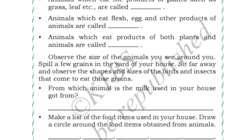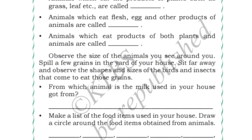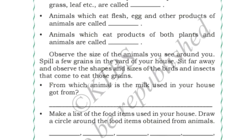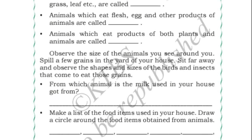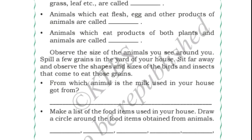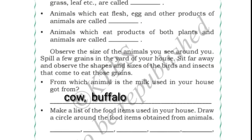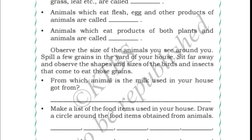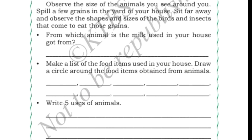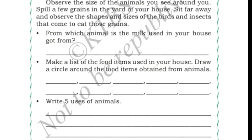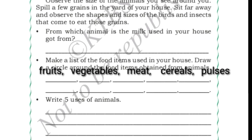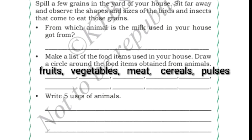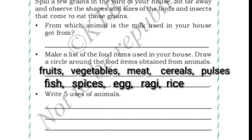Based on food, animals are classified into herbivorous, carnivorous, and omnivorous. Next, observe the different types of animals and birds around us. From which animal is the milk used in your house got from? The milk we use at home comes from cow and buffalo, so we write cow and buffalo. Now make a list of food items used in your house: fruits, vegetables, meat, cereals, pulses, fish, spices, egg, ragi, rice.